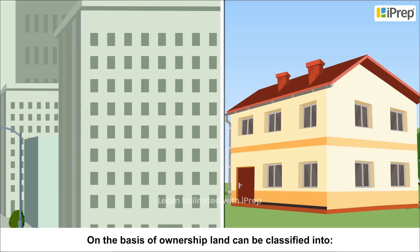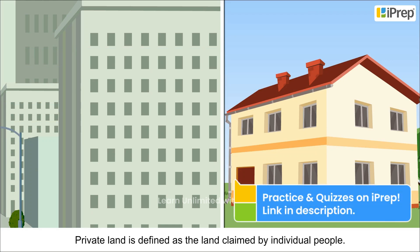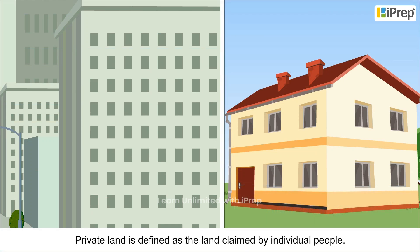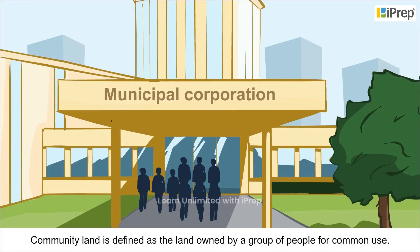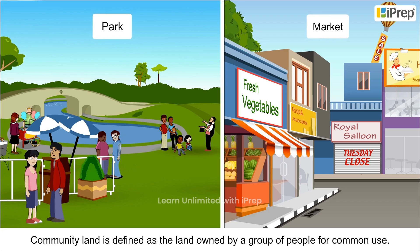On the basis of ownership, land can be classified into: private land, defined as the land claimed by individual people (example: flat, bungalow), and community land, defined as the land owned by a group of people for common use (example: parks, markets).